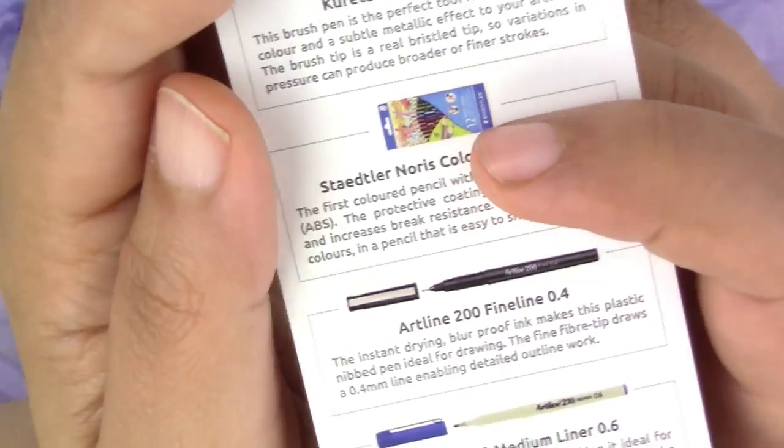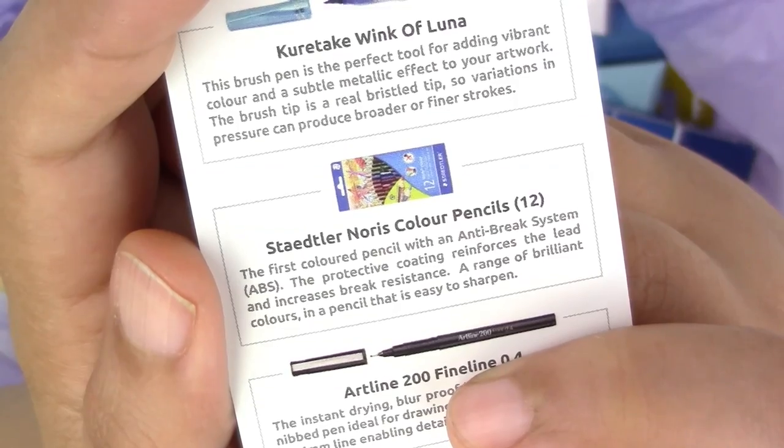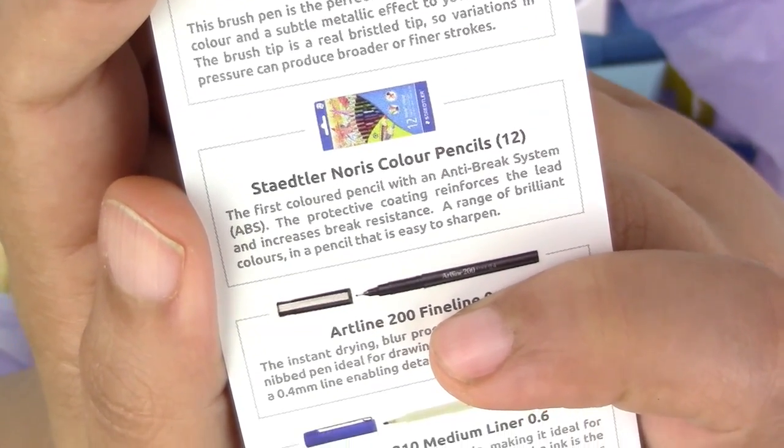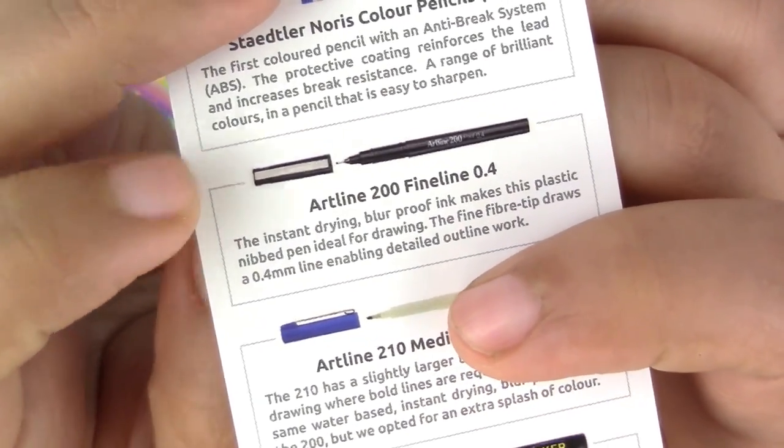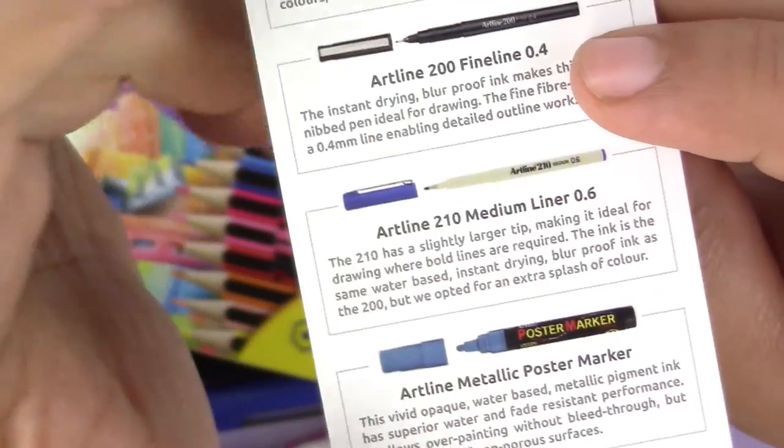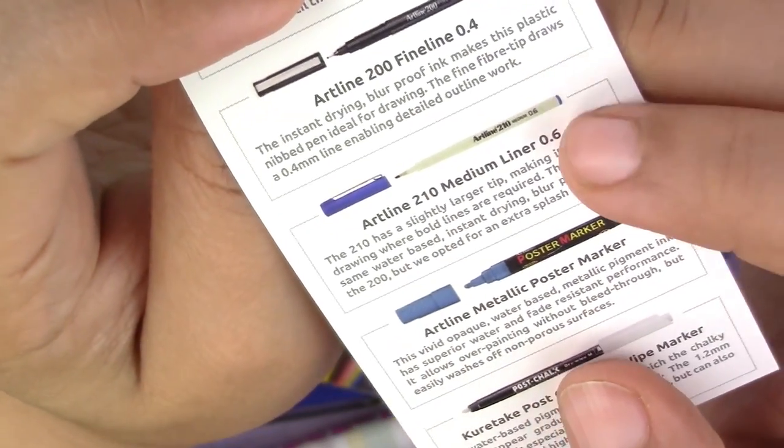We have a Staedtler Noris Color Pencil set 12 and it's anti-break. I wonder if it's a wax pencil set. We're gonna have to try this out. We have an Artline fine liner. I have a couple of these from past Scrawlr Boxes. Another Artline medium liner, I think this one is blue. This one's black.